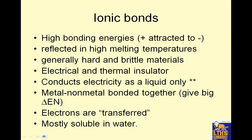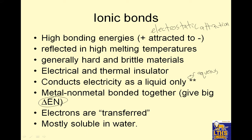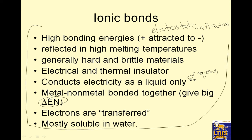Ionic bonds have high bonding energies — the positive is attracted to negative, which is called electrostatic attraction. Positives attract negatives and negatives attract positives. This is reflected in high melting temperatures, so ionic compounds are solids at room temperature usually. They're hard and brittle materials. They are electrical and thermal insulators. They conduct electricity as a liquid only, or aqueous. They are a metal and a nonmetal bonded together with a big electronegativity difference. Electrons are transferred, and they are mostly soluble in water.